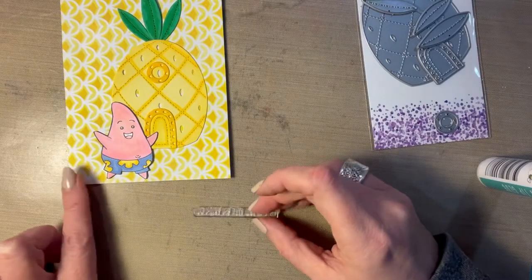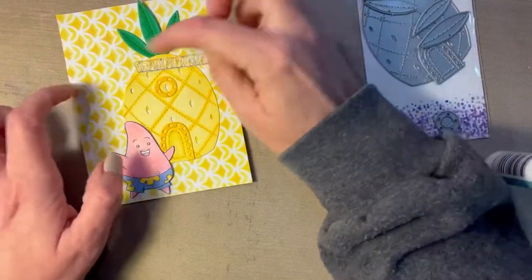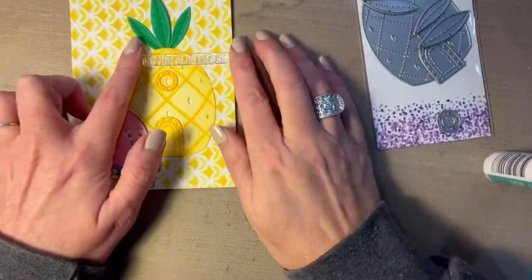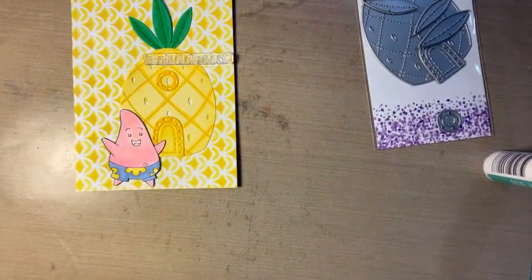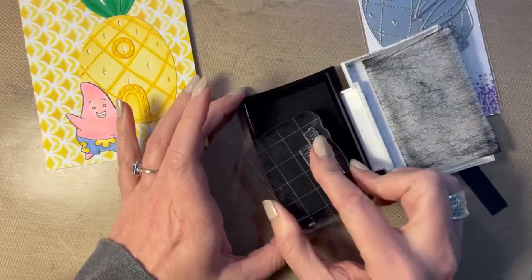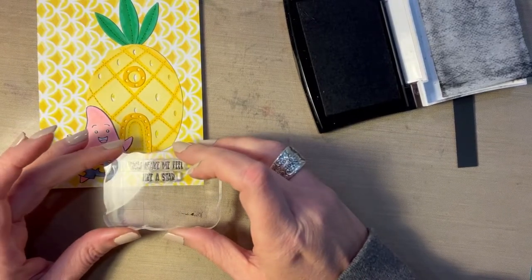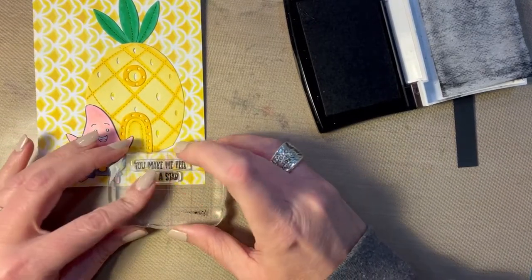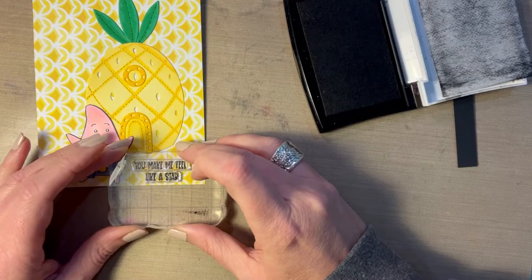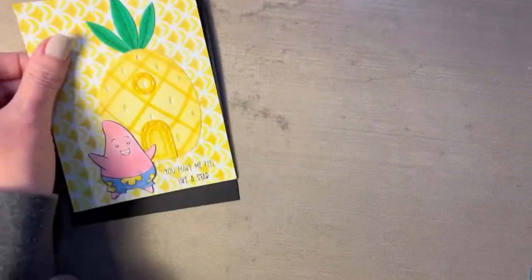I glued the pineapple towards the right of the card front because I wanted to make sure the character had enough room. And then I also wanted to, I was trying to figure out what to do with the sentiment. I didn't know if I wanted to come in with a banner, but nothing looked right to me. So I actually cut my stamp. And I know some of you guys are going to be freaking out about that, but it's totally fine. It goes back together. It works. You can make it work in a line. I'm using some VersaFine onyx black ink to stamp that in.